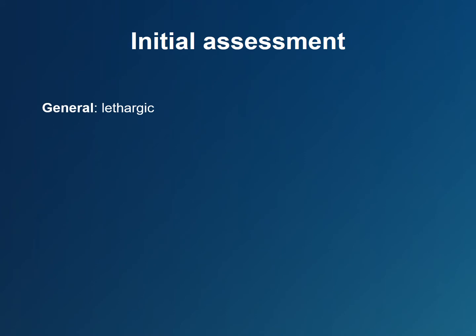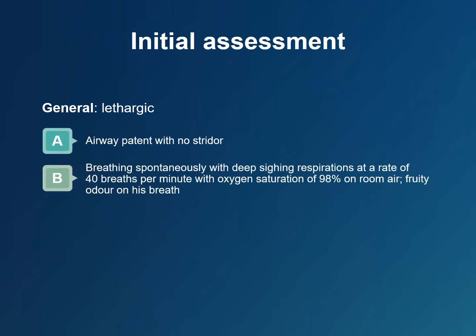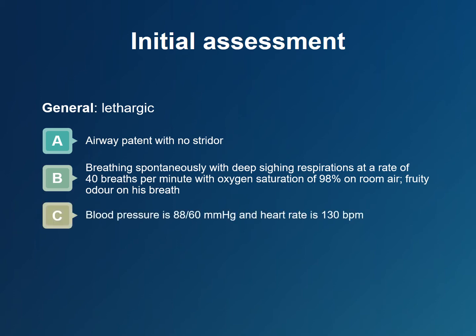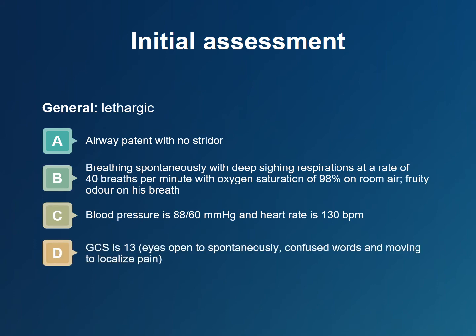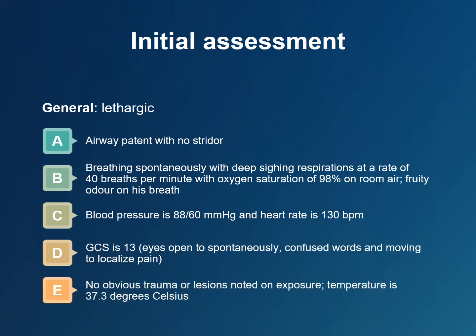Upon initial assessment, Sam is lethargic. His airway is patent with no stridor, but he is tachypneic, breathing with deep sighing respirations at a rate of 40 breaths per minute. While his oxygen saturation is 98% on room air, his breath has a fruity odor. Sam is hypotensive with a blood pressure of 88 over 60, and he is tachycardic with a regular pulse of 130 beats per minute. His Glasgow Coma Scale score is 13, and there is no sign of trauma on the primary survey.